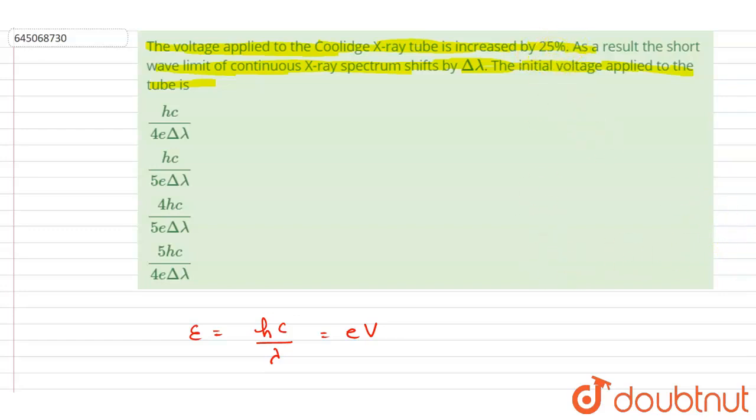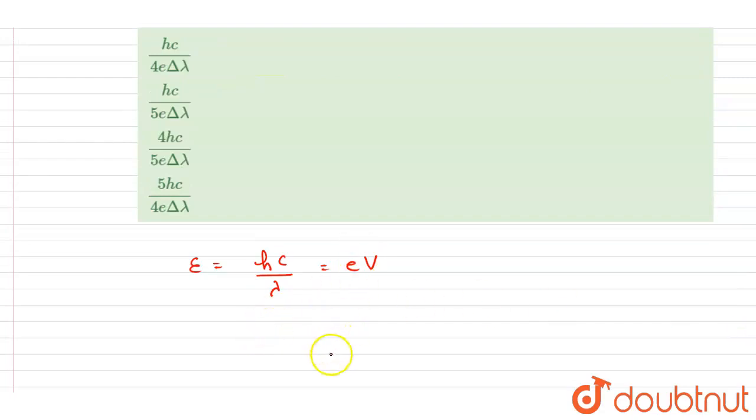So if you see here, it is said that the potential difference is increased by 25 percent. So let's say earlier it was V, right? Now it will be 25 percent more, that is 125 by 100 times V.